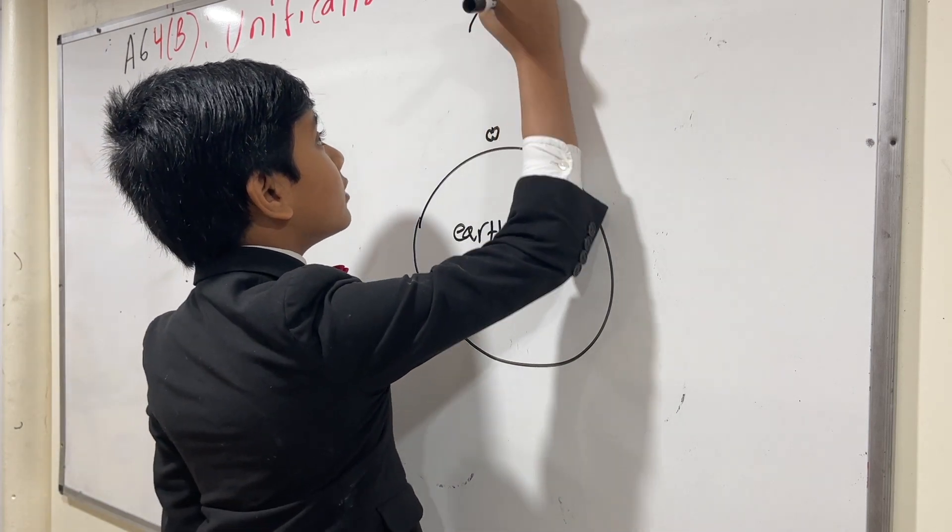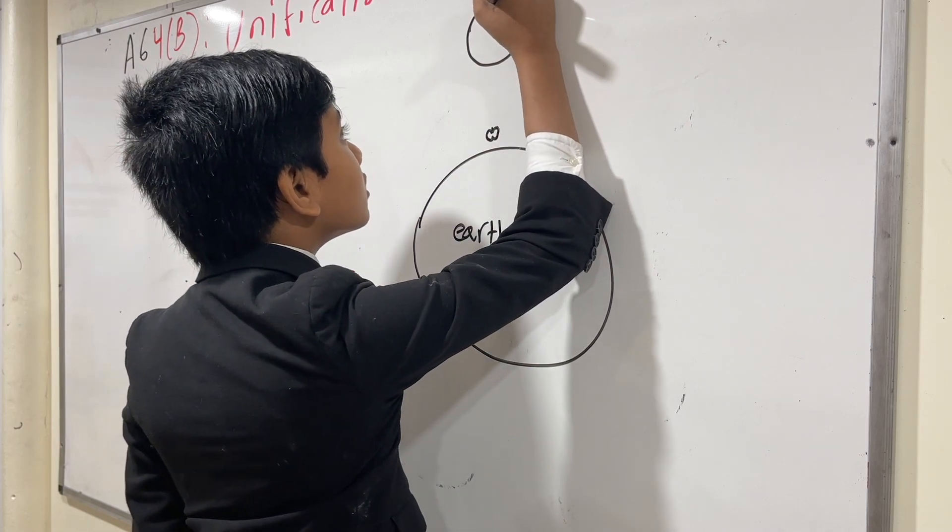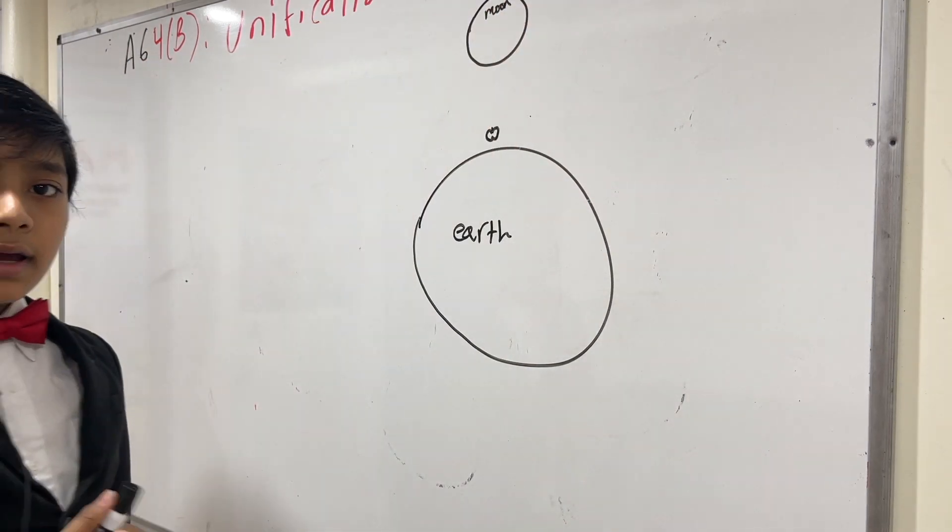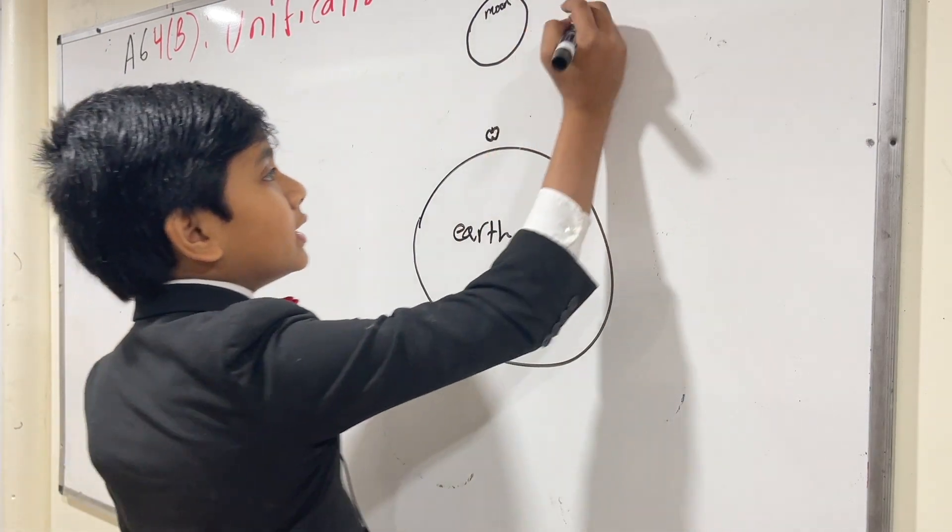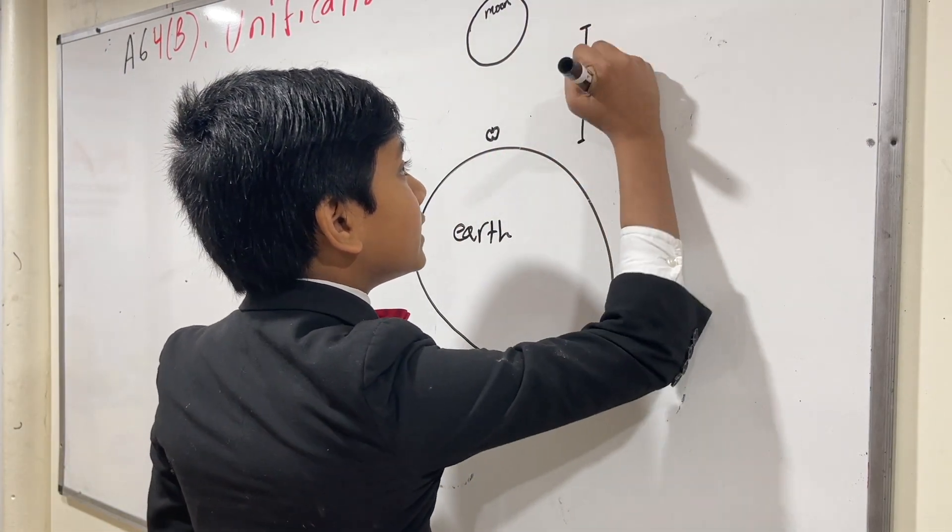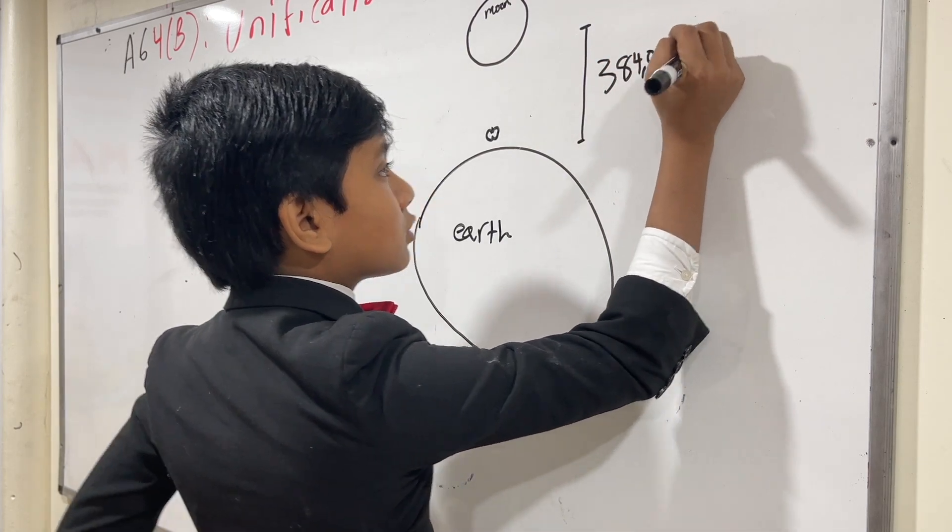And then, let's say, we have the moon over here. And the moon is considered to be a heavenly body because it's in space, 384 million kilometers, uh, meters away.